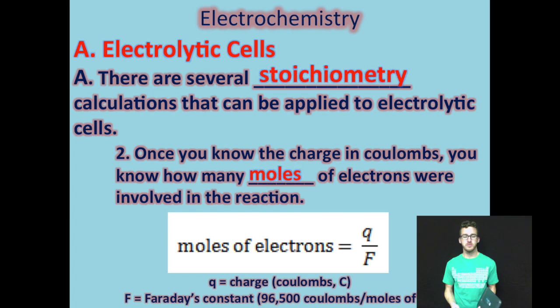Now, once you know the charge in coulombs, you also know how many moles of electrons were involved in that reaction. Faraday's constant tells us the charge per mole of electrons. So by simply determining the amount of charge that has flowed through your cell and dividing it by Faraday's constant, you can determine the number of moles of electrons. If you determine your charge to be 96,500 coulombs, then you know one mole of electrons has flowed through your cell. If it's less than 96,500 coulombs, then you know you have less than a mole of electrons that flow through your cell. Greater than 96,500? More than one mole of electrons that flow through your cell.